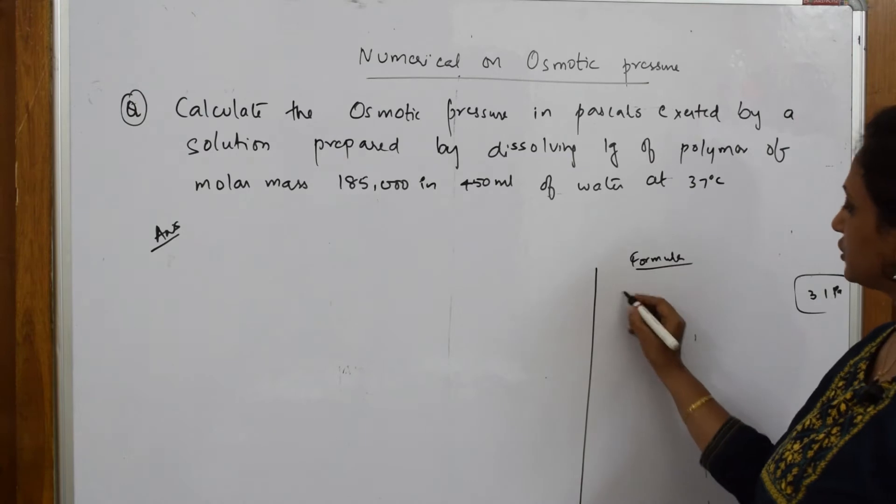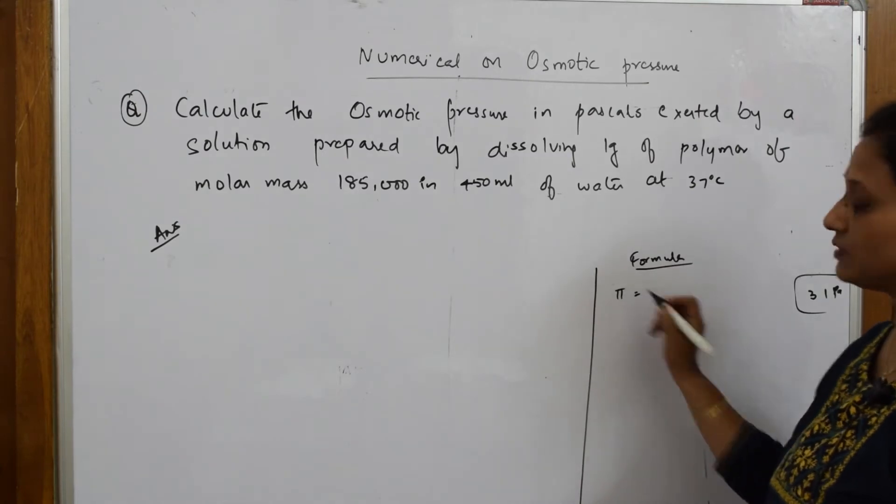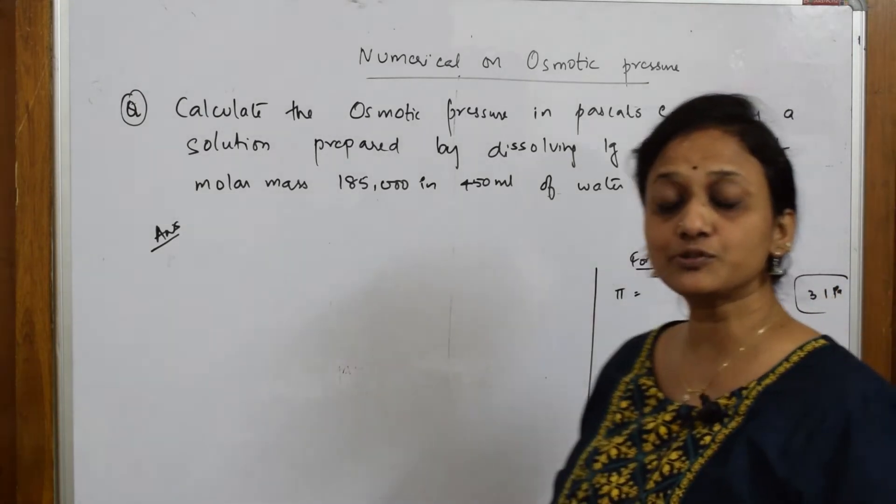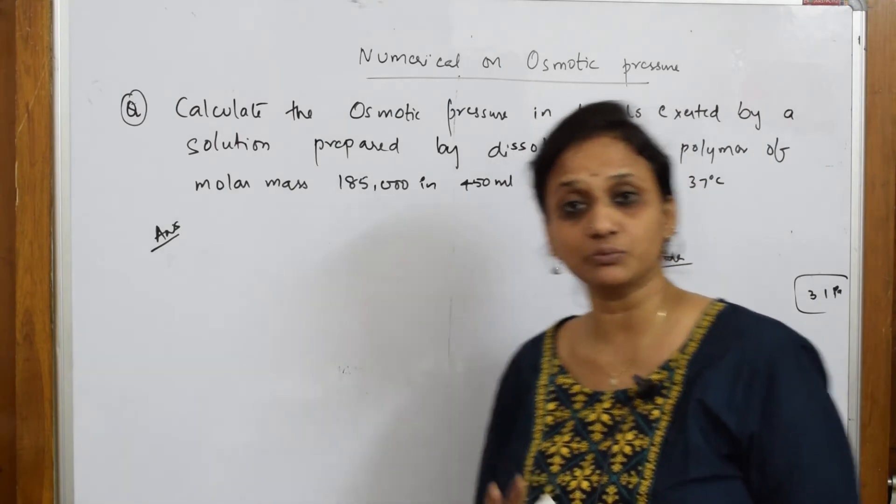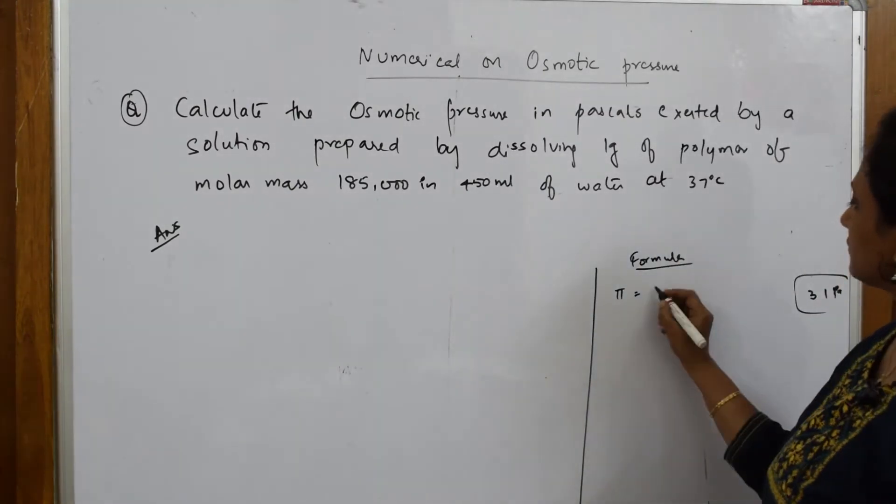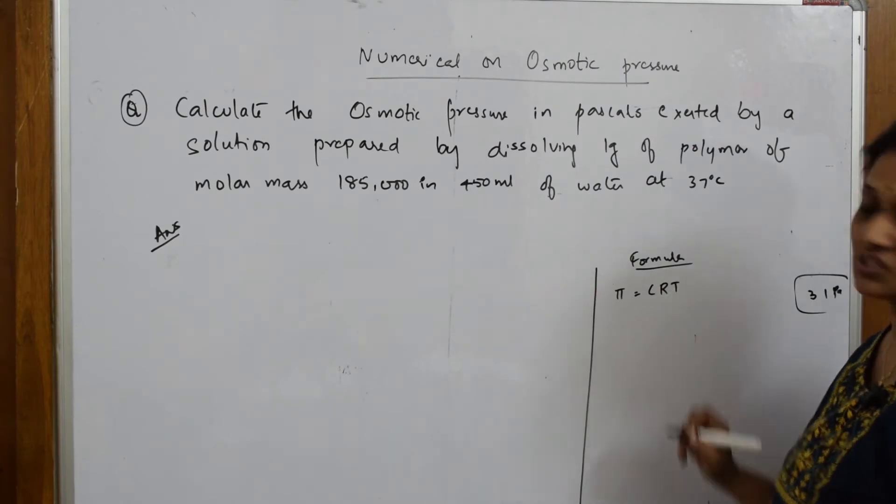Osmotic pressure pi is equal to, we very well know osmotic pressure is proportional to concentration as well as temperature, both the factors. So pi is equal to CRT, this is what you have proved.